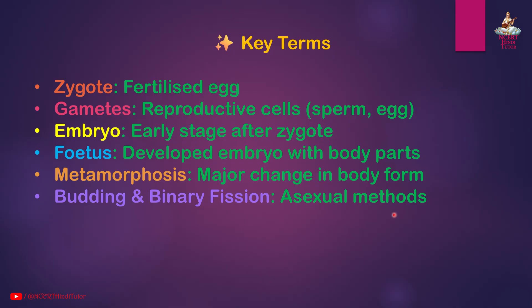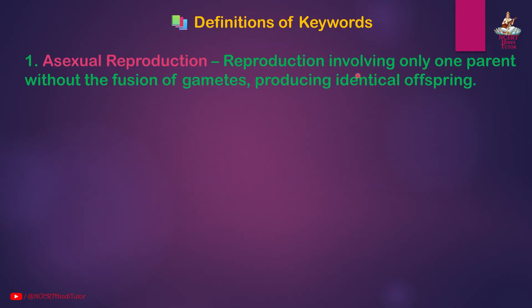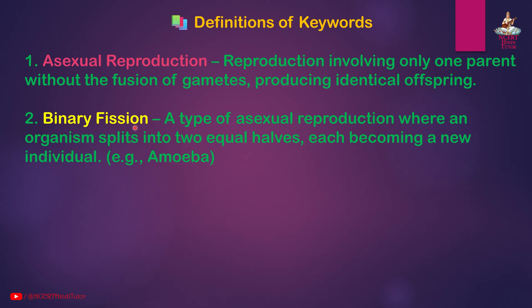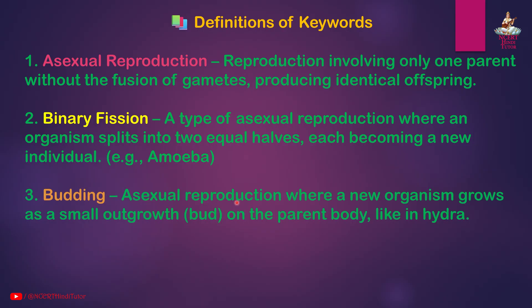Now let's move on to the definitions of keywords. Asexual reproduction: reproduction involving only one parent without the fusion of gametes, producing identical offspring. Binary fission: a type of asexual reproduction where an organism splits into two equal halves, each becoming a new individual — example: amoeba. Budding: asexual reproduction where a new organism grows as a small outgrowth (bud) on the parent body, like in Hydra.